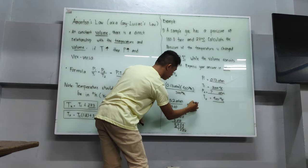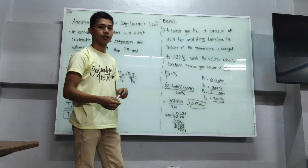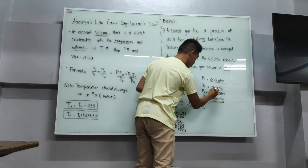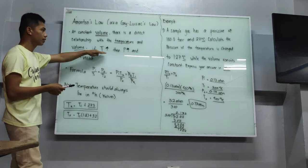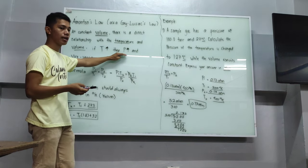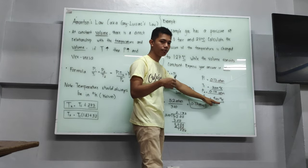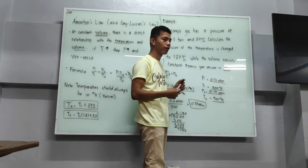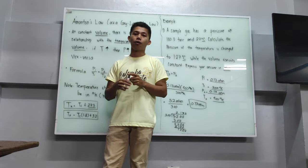Our final answer is 0.17 ATM or atmosphere. As we can observe, according to the concept of Amontons' Law, the relationship between temperature and pressure is directly proportional. T1 was 300 Kelvin and it increased by 100 to become 400 Kelvin. Therefore, from 0.13 ATM, we have an increased final pressure of 0.17 ATM. That is all for Amontons' Law, also known as Gay-Lussac's Law.